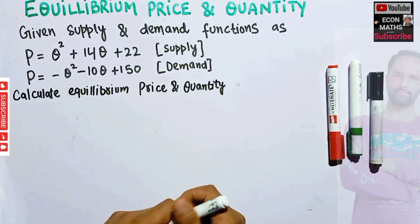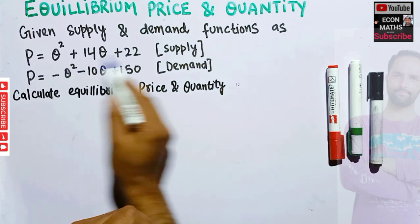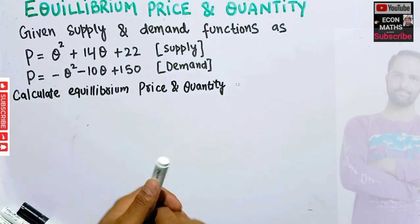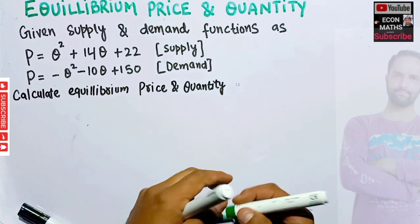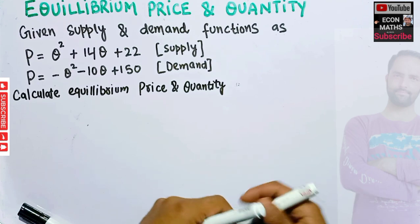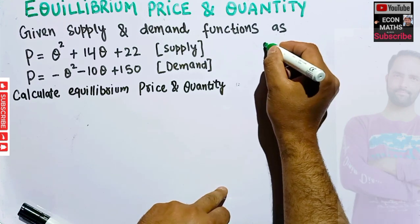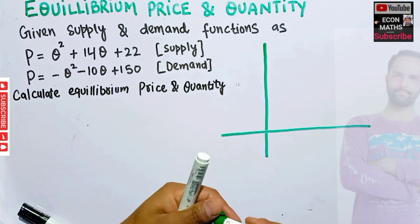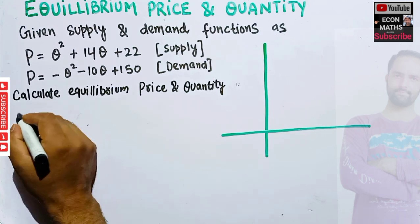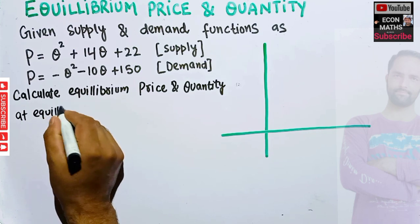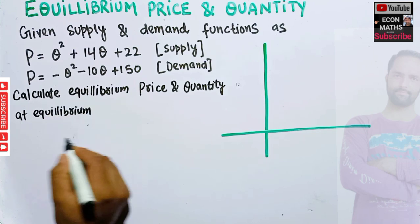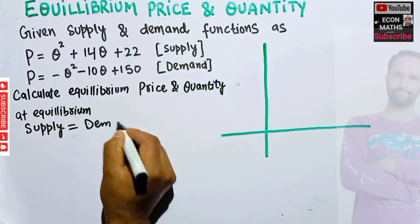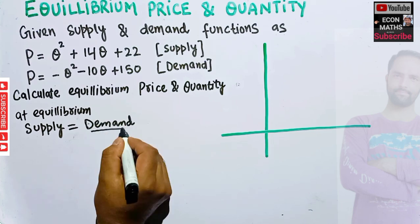Equilibrium occurs where demand and supply curves intersect. Here we have two quadratic functions, so the graph will not be a straight line. At equilibrium, supply should be equal to demand — that means quantity supplied should be equal to quantity demanded.